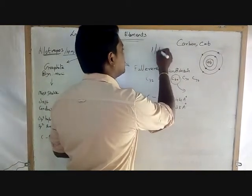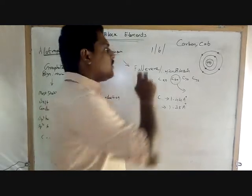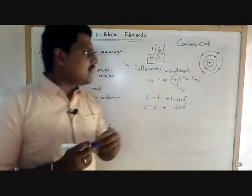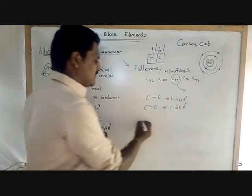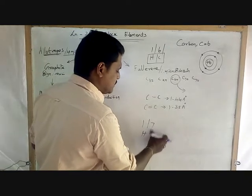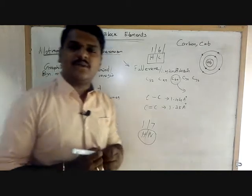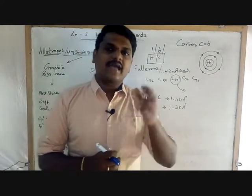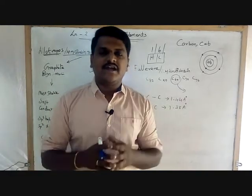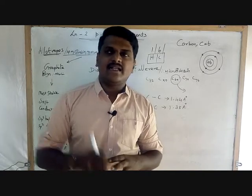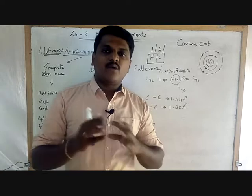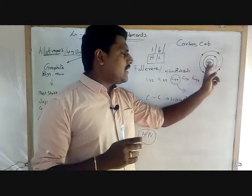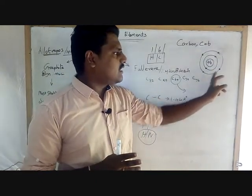Example: atomic numbers 1, 6, 20. Atomic number 1 is hydrogen, atomic number 6 is carbon. Carbon has atomic number 6 and has 6 electrons: 1, 2, 3, 4, 5, and 6.